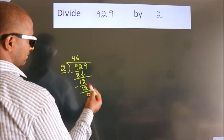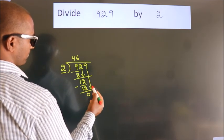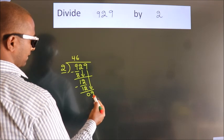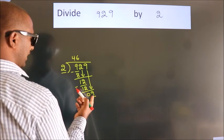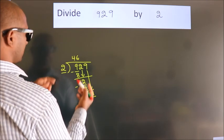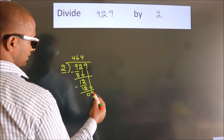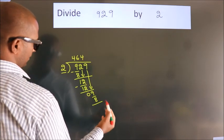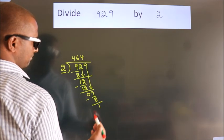After this, bring down the next number. So 9 down, so 9. A number close to 9 in the 2 table is 2 times 4, which is 8. Now we subtract. We get 1.